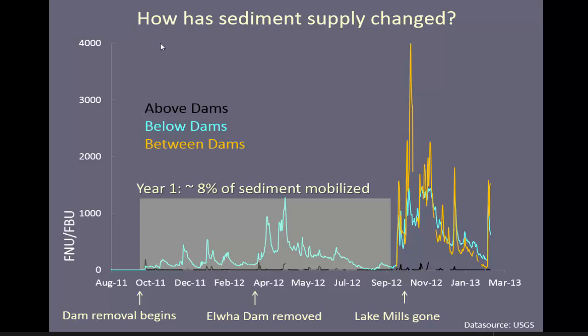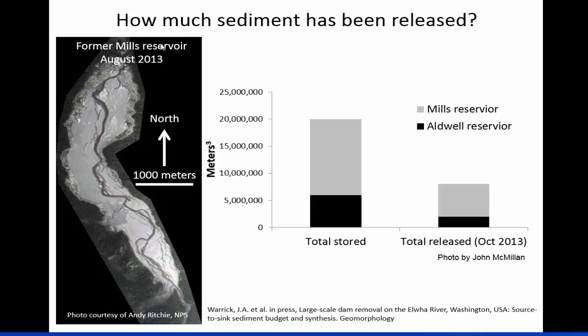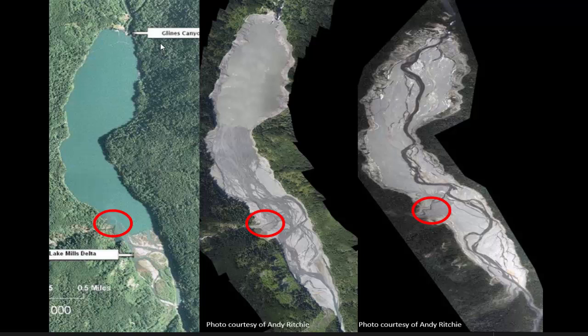That's when suspended sediment levels really increased because the river had access to all that sediment. About 40% of all the stored sediment has been released to date — this is the sediment in Mills Reservoir, the upper one, and the lower reservoir. To give you a visual: water is flowing from bottom to top here, and this red circle is Boulder River coming in. As the reservoir goes away and the dam goes down, the river starts to show up.